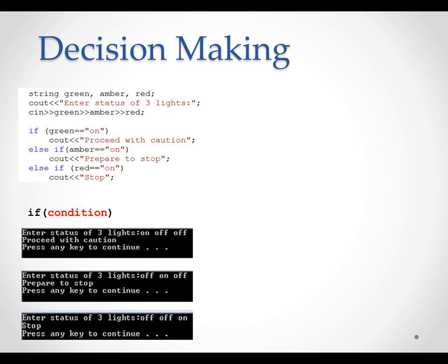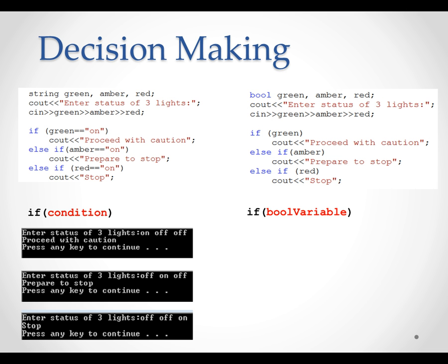The condition compares the value against a string variable. A string is a series of characters; each character consumes one byte of memory. To reduce the use of memory, we can use a boolean variable. A boolean variable can only have two possible values: true or one, and false or zero. Each boolean variable consumes one byte of memory. When a boolean variable is true, action can be taken; otherwise, action will be skipped.